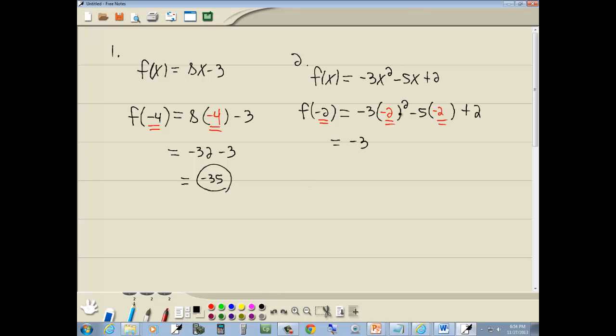Now order of operations says we do the squared part first. So negative 2 squared gives us 4. Negative 5 times negative 2 is 10 plus 2. Negative 3 times 4 is negative 12 plus 10 plus 2 is 12. Negative 12 plus 12 gives us 0.